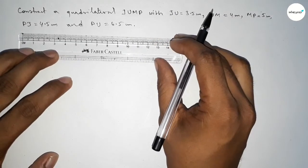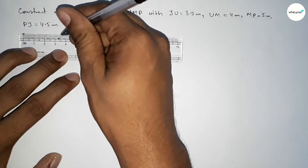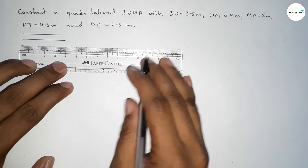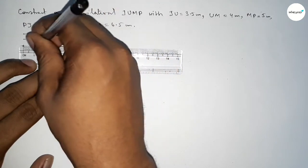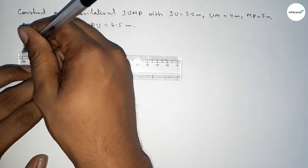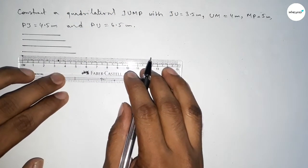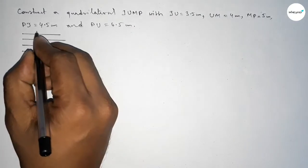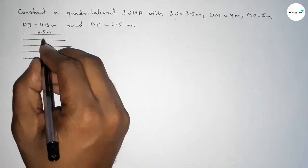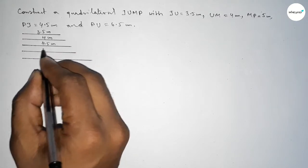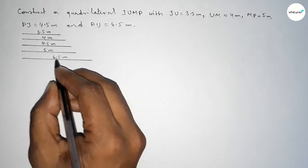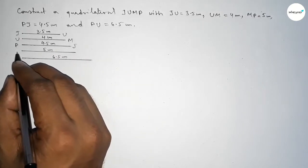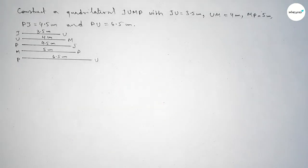First of all, we draw all the sides as reference lines: a line of length 3.5 centimeter, another of 4 centimeter, another of 4.5 centimeter, another of 5 centimeter, and lastly a line of 6.5 centimeter. So this one is JU, this one UM, this one PJ, this one MP, and this one PU.